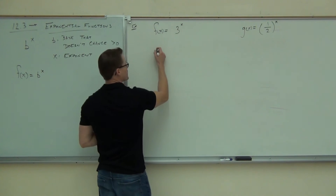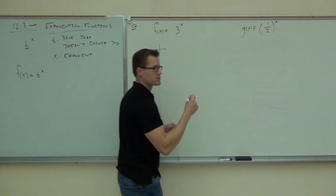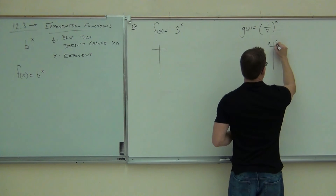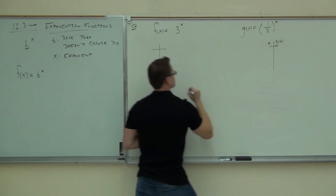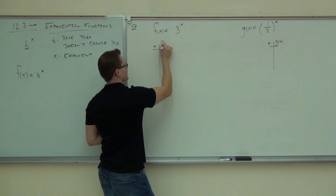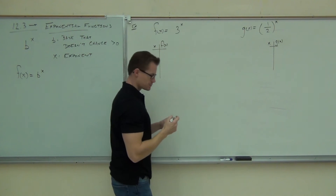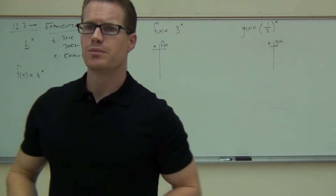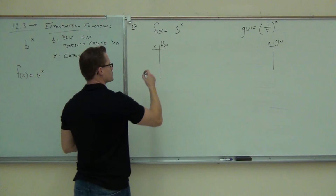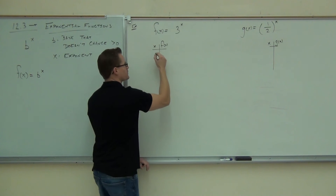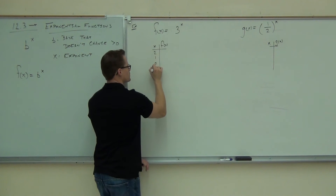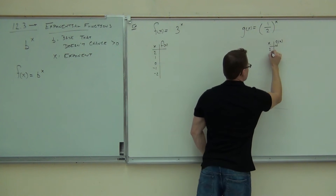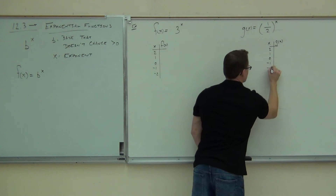We're going to make these with a table because we have no other way to do it right now. So we'll set up X and G of X for one function, and X and F of X for the other. Typically we pick five numbers. We'll start at the positive side first — two, one, zero, negative one, negative two — and do the same for the other graph.